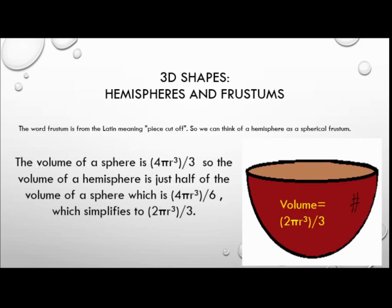The volume of a sphere is 4πr³ over 3. So the volume of a hemisphere is just half of that, which is 4πr³ over 6, which simplifies down to 2πr³ over 3.